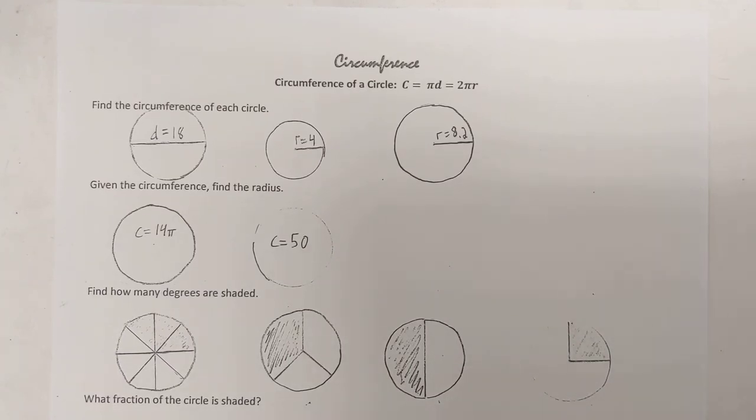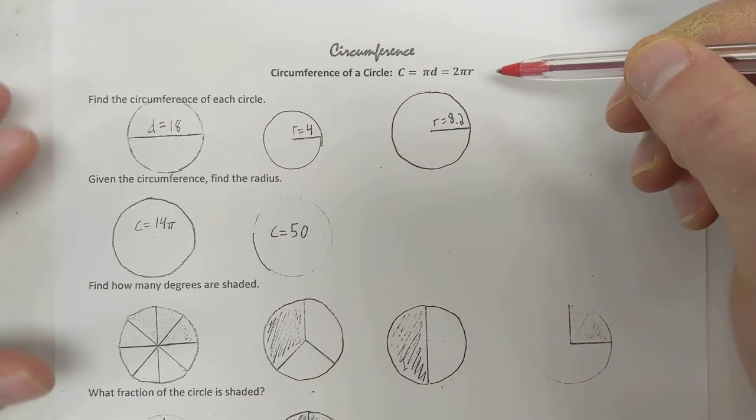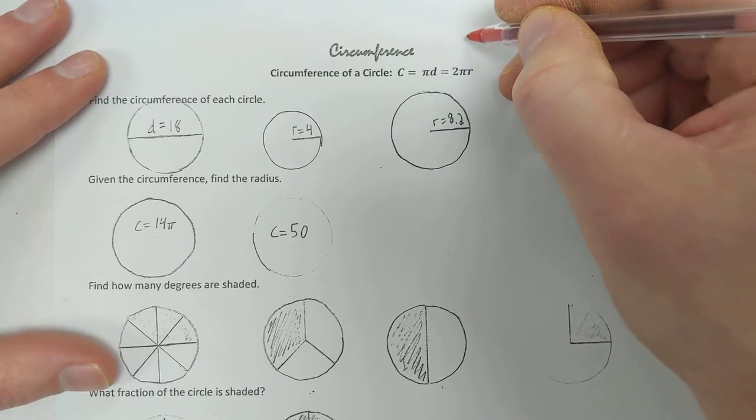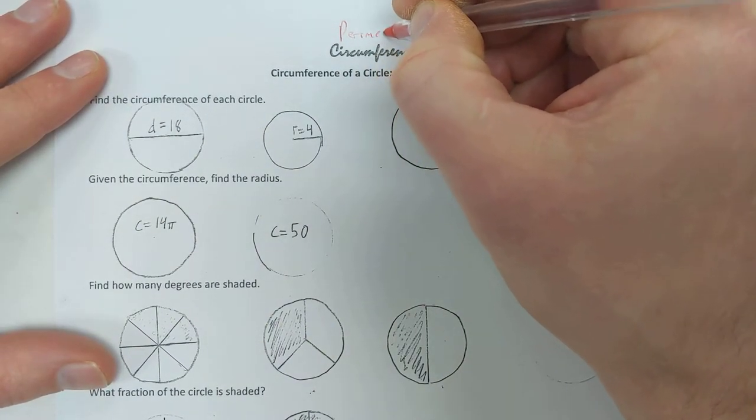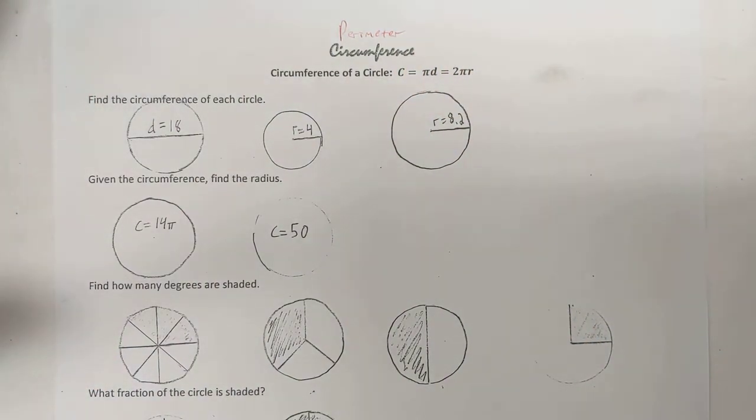Hello everyone! Yay! Math! Alright, so circumference. Circumference is the distance around a circle. You may also think of circumference as the perimeter of a circle. Why do they call it circumference and not perimeter? Honestly, I don't know.